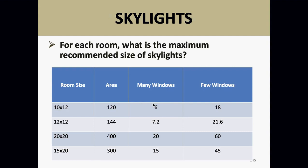If you go much over these limits, you're going to have problems with heating and cooling. If these are on a south-facing roof, you might as well add a couple tons of cooling to the system, because that's what it's going to take.